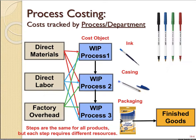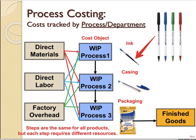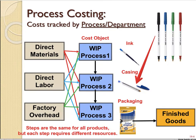With process costing it's different — costs are tracked by process or department, since different departments handle each process. Let's take a simplified pen example: the first step is preparing the ink inside the pen, the second step is the casing — the outside plastic and lid — and the third step is packaging them ready for sale.